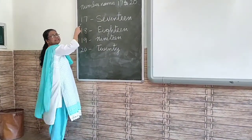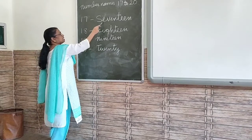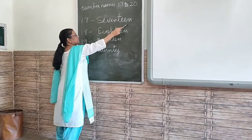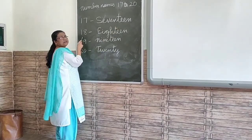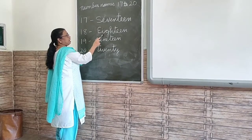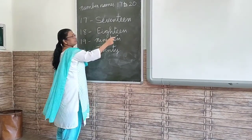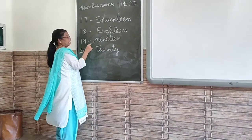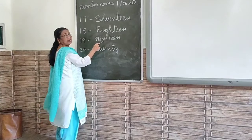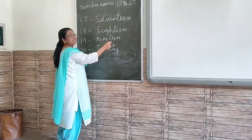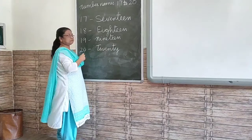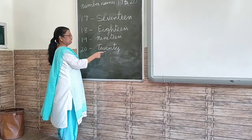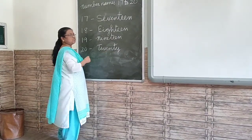Once more. 17: S, E, V, E, N, T, W, E, N. 17. 18: E, I, G, H, T, W, E, N. 18. 19: N, I, N, E, T, W, E, N. 19. 20: D, W, E, N, T, W, E, N. 20.